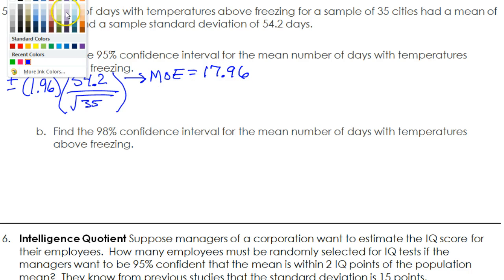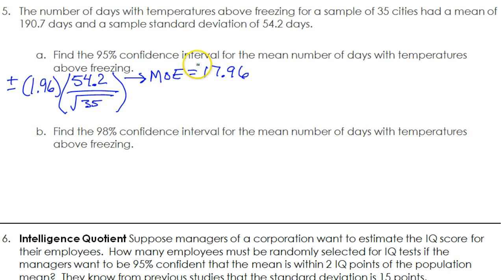So to build the confidence interval, I need to take this and I need to add and subtract with the sample mean. The sample mean was 190.7 days. So I'm going to start with 190.7 and I will subtract 17.96, and I will add 17.96. So this is my 95% confidence interval.